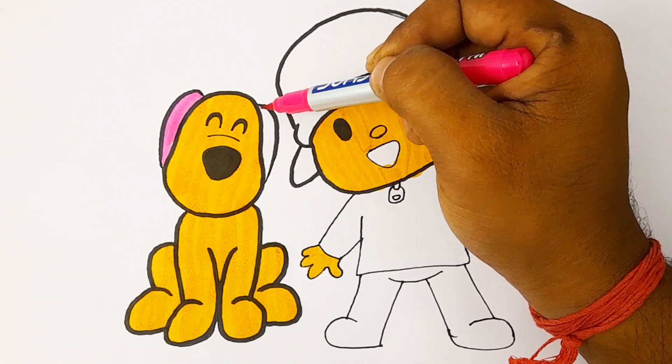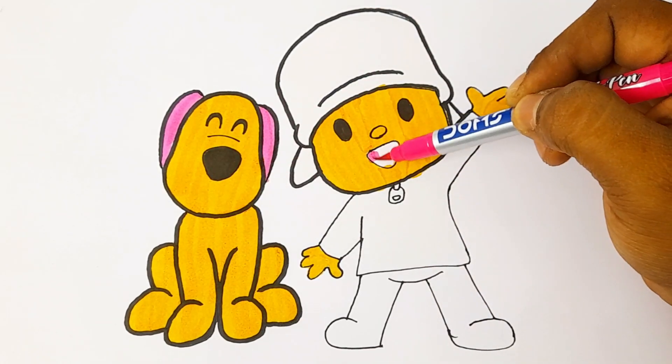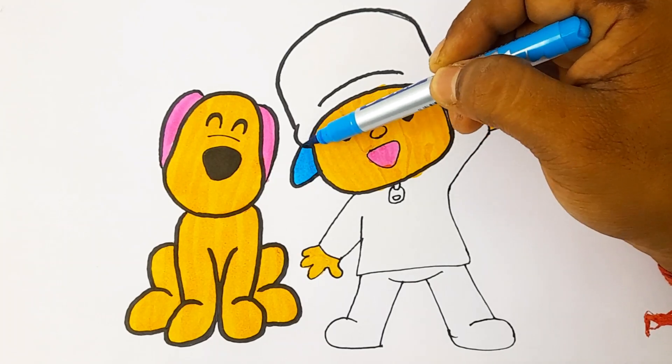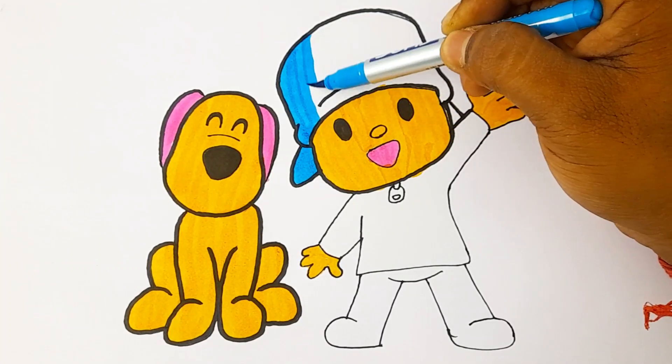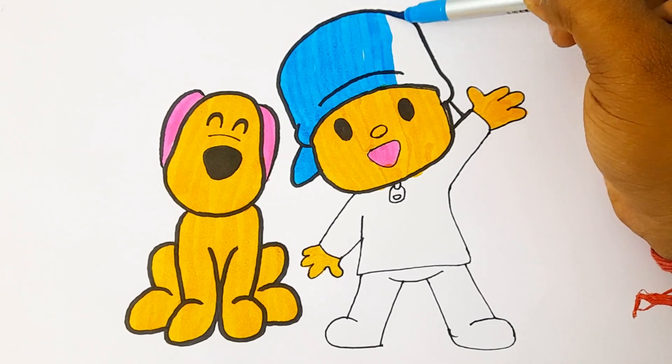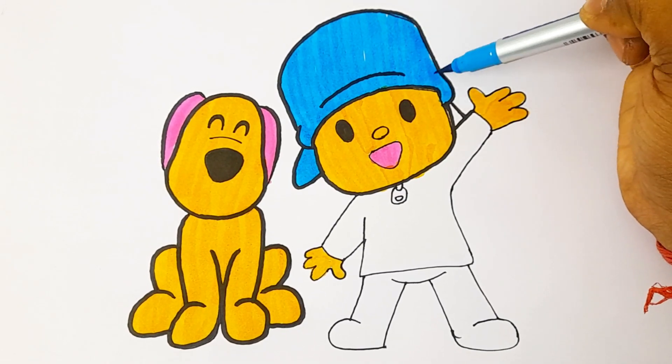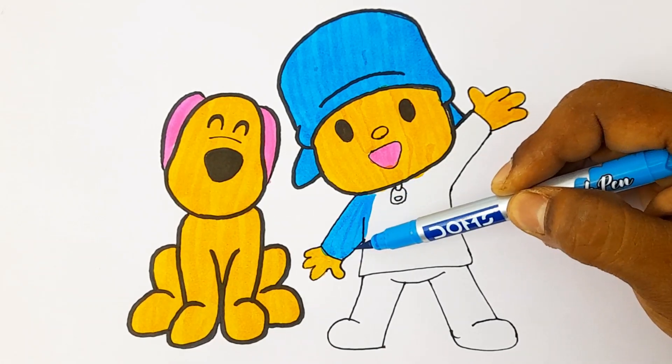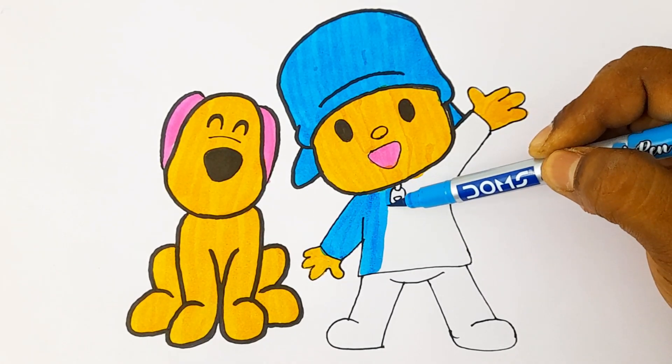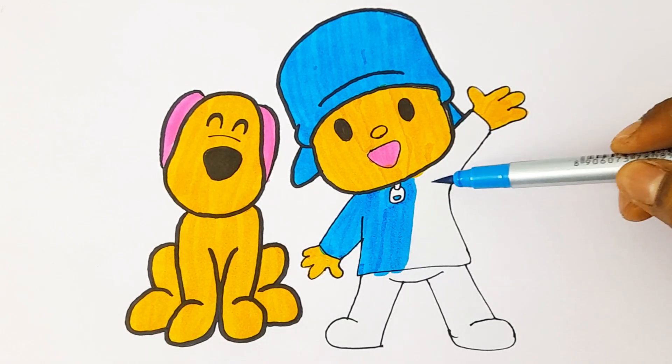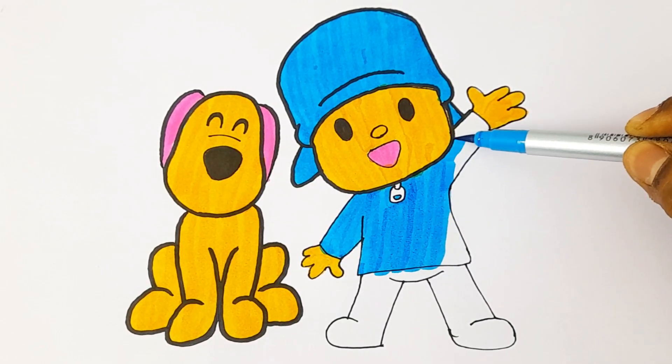Now we will paint the Lola Pocoyo ear by dark pink color. It's time to color the Pocoyo hat and his shirt. Which color, kids? Sky blue color. We are using the sky blue color for the Pocoyo hat and his clothes.